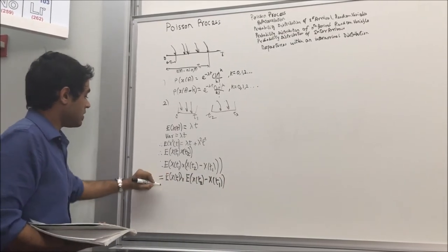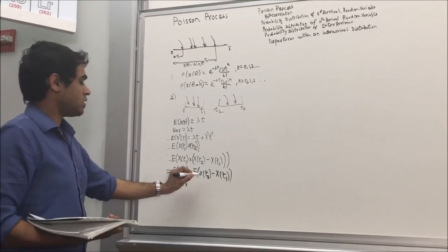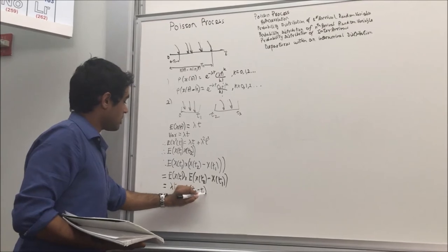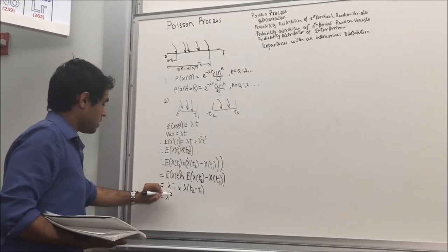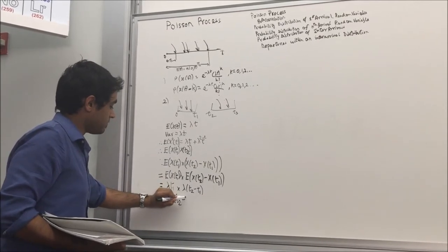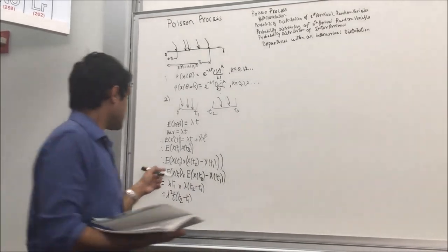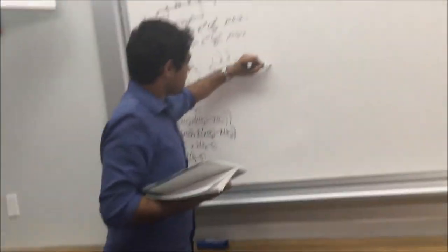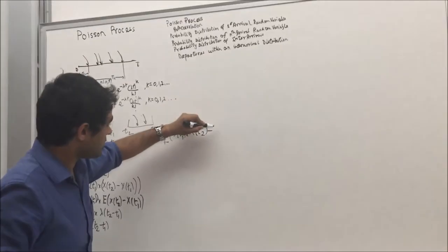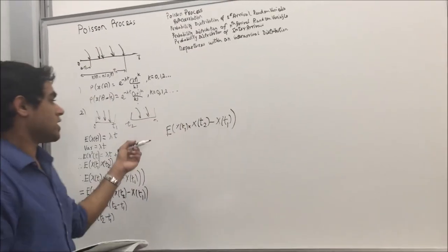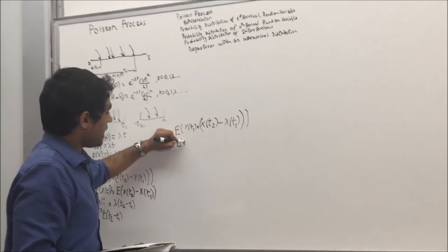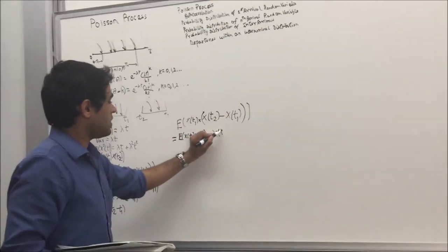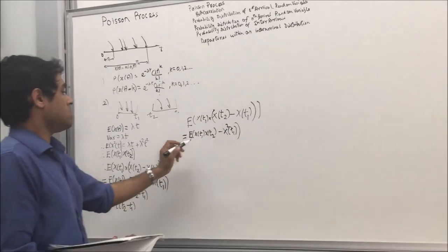We know that E[X(t1)] = λt1 and E[X(t2) − X(t1)] = λt2 − λt1 = λ(t2 − t1). So this equals λ²t1(t2 − t1). Now, E[X(t1) · (X(t2) − X(t1))] can be expanded into E[X(t1) · X(t2)] — which is what we want — minus E[X²(t1)].